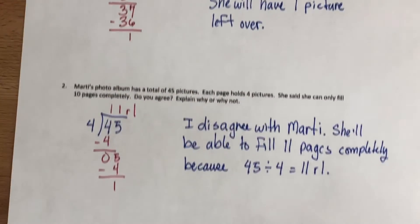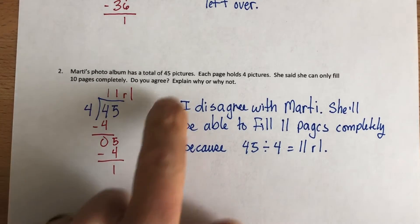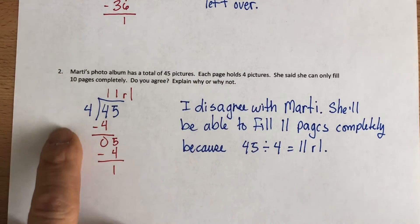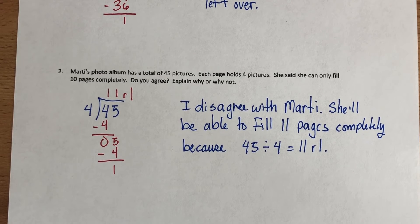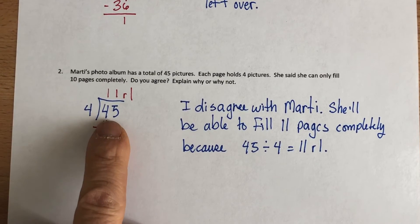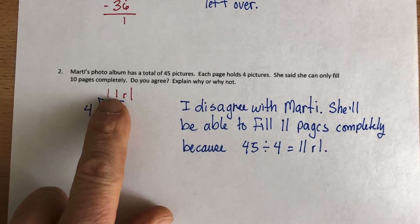Now the bottom says: Marty's photo album has a total of 45 pictures. Each page holds four pictures. She said she can only fill 10 pages completely. Do you agree? Explain why or why not. In my head, what I did was 4 times 10 equals 40, and I knew that she could get another complete page. So I proved it by division: 45 divided by 4. That would be 11 remainder 1.